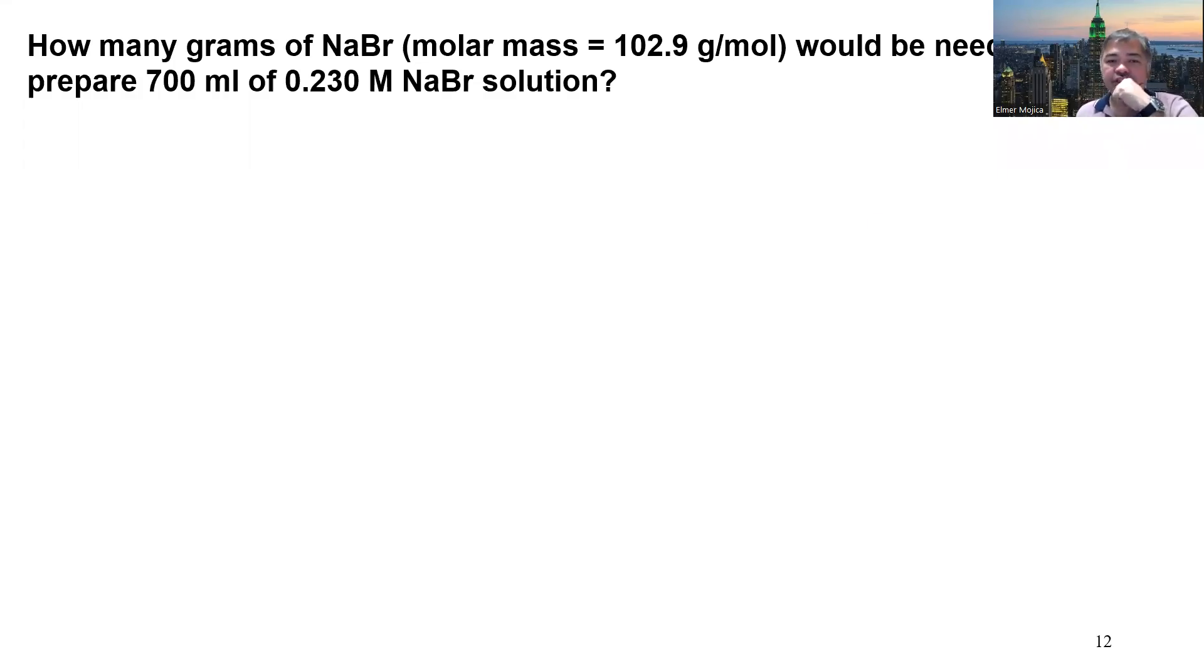In this next problem, we are asked to determine how many grams of sodium bromide with molar mass given as 102.9 grams per mole would be needed to prepare 700 ml of 0.230 molar NaBr solution.